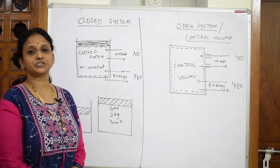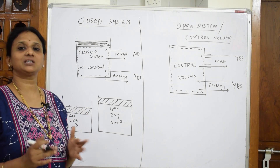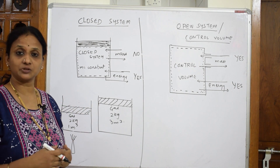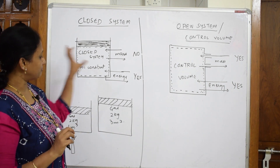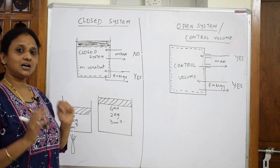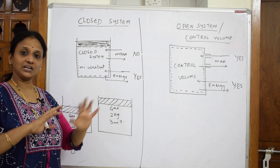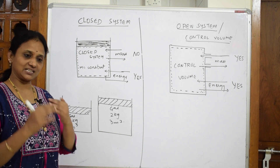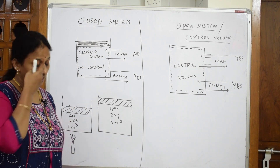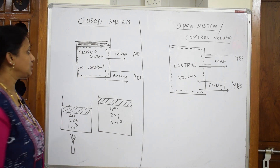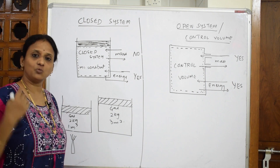Now, the system is of two types: closed system and open system. In thermodynamics, we concentrate on two important things about the matter under study — the mass and the energy transacted or exchanged. In a closed system, the mass remains constant — there is no exchange of mass.